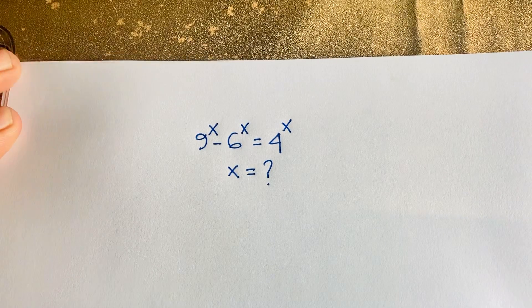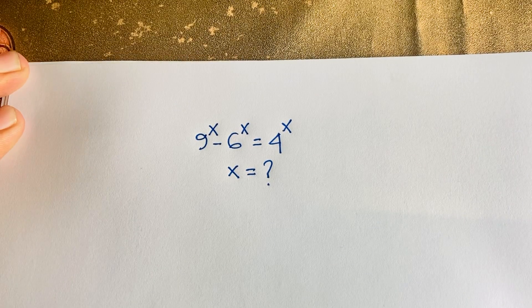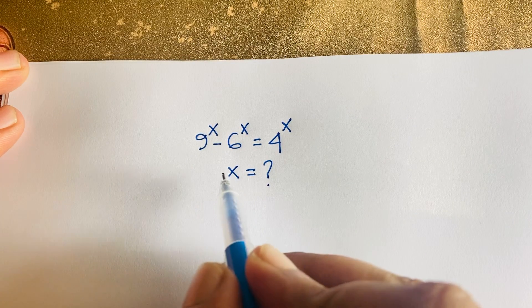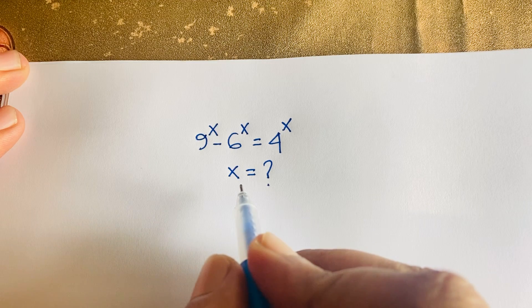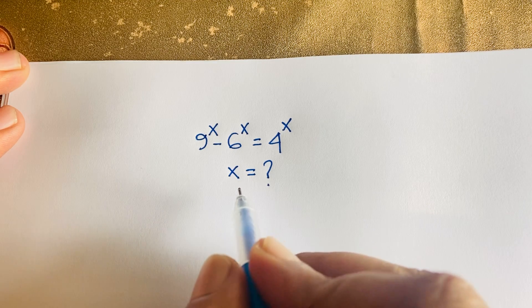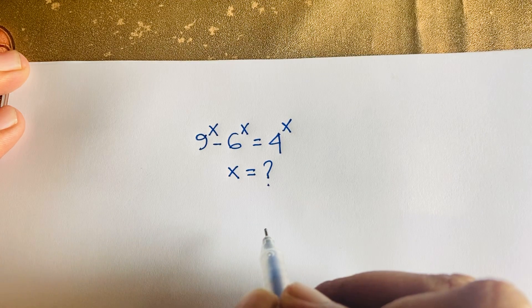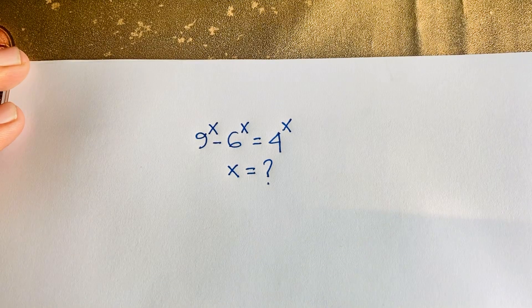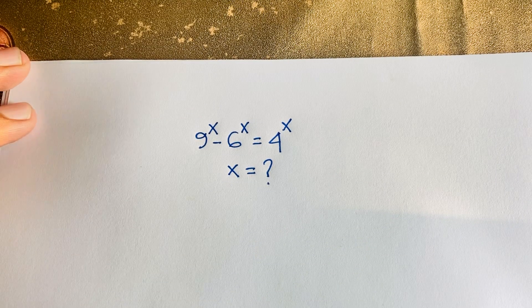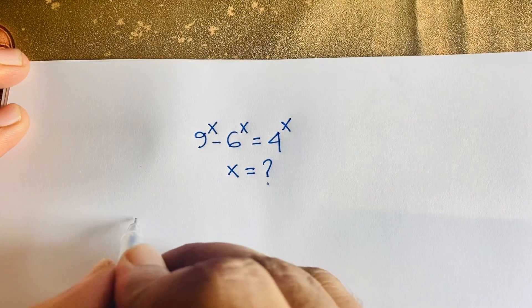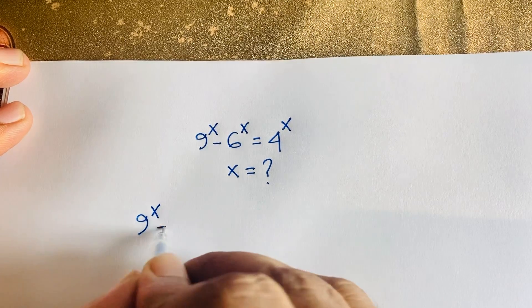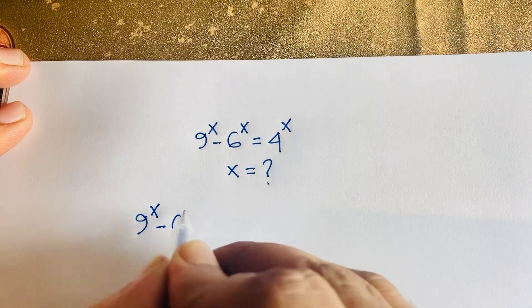Hello everyone. In this video we solve the exponential equation: 9 to the power x minus 6 to the power x is equal to 4 to the power x. What is x? This is interesting math, so let's start.